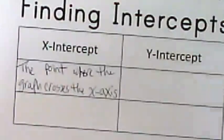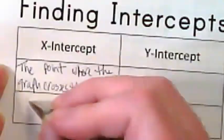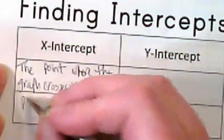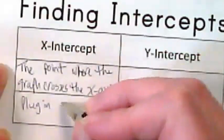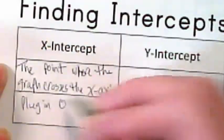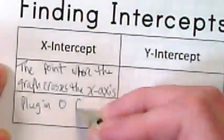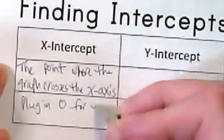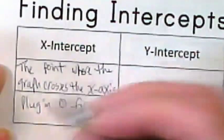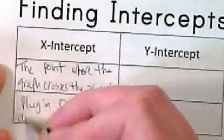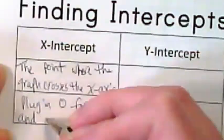To find the x-intercept, we're going to plug in zero for Y and solve for X.